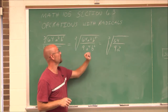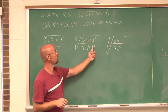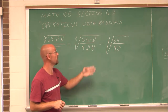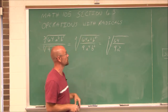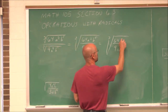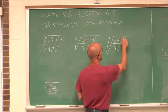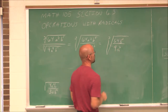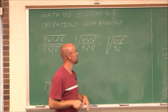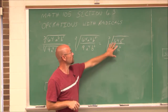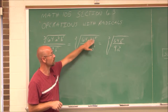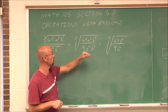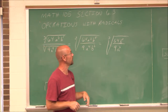And then we have b⁵ over b². I can use the quotient rule there. Since they have the same base, 5 minus 2 is 3 — b to the positive 3. We put that in the numerator. So notice by doing that, we're simplifying it to look a little nicer in numerator and denominator.